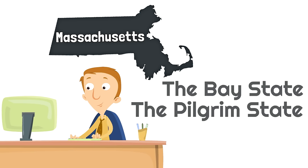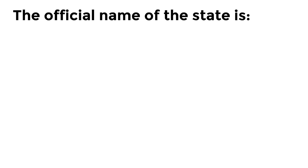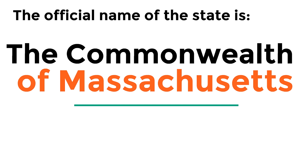There's a very fascinating fact about Massachusetts relating to its name. The official name of the state is the Commonwealth of Massachusetts — it's officially known as a commonwealth. Even though it's officially a commonwealth, it's still a state of the United States and functions just like the other states. They just call themselves a commonwealth, which is kind of cool.